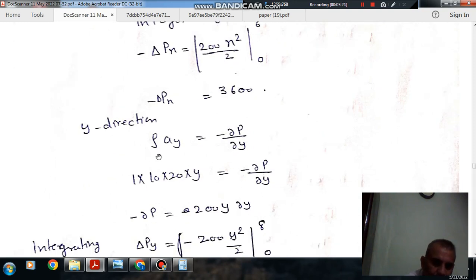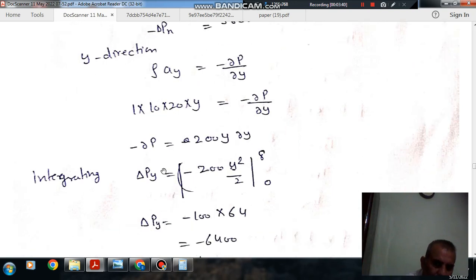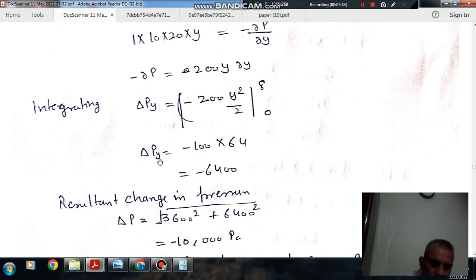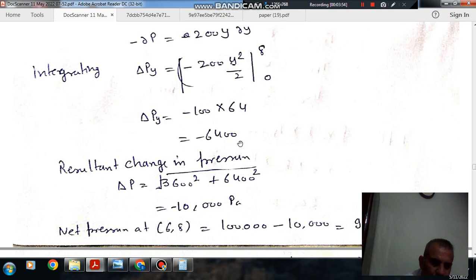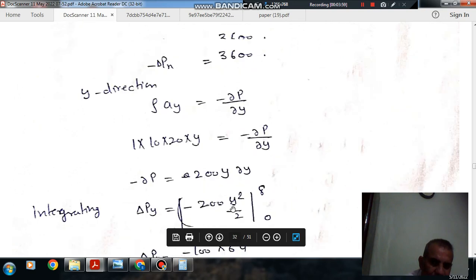Similarly, in Y direction, ρAy equals minus ∂P/∂y. So ∂P/∂y equals minus ρABY equals minus 200Y. Integrating, ΔPy equals minus 100Y² with limits from 0 to 8, which gives minus 6400 Pascal. The decrease in pressure in Y direction is minus 6400.